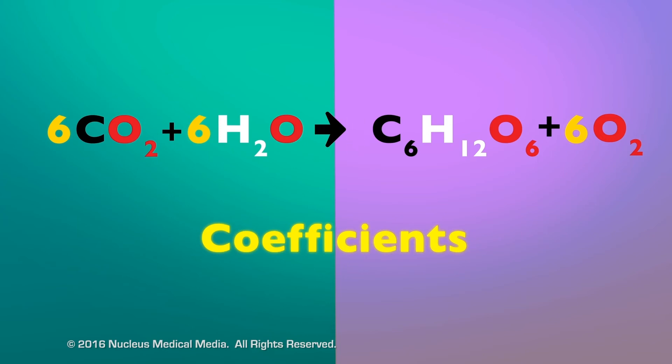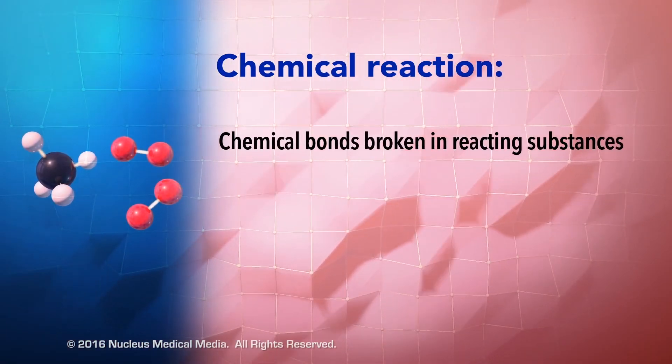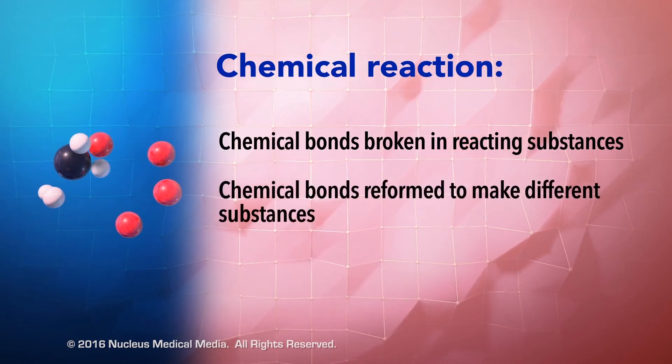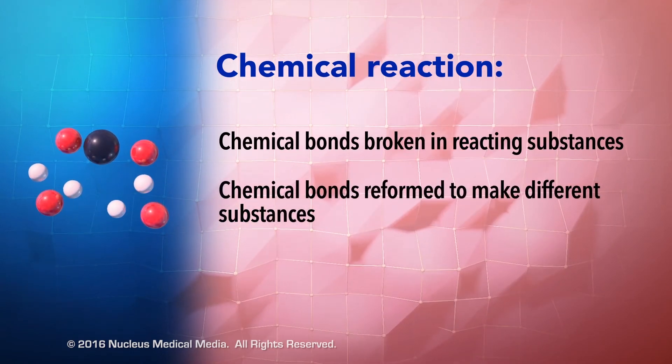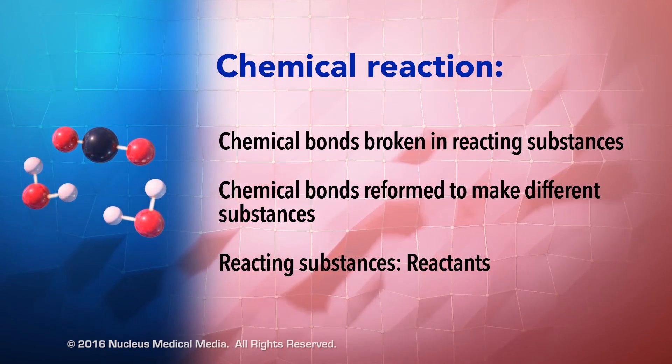To review, in a chemical reaction, chemical bonds in reacting substances are broken, then reformed to make different substances. The reacting substances are called reactants. The substances produced are called products.